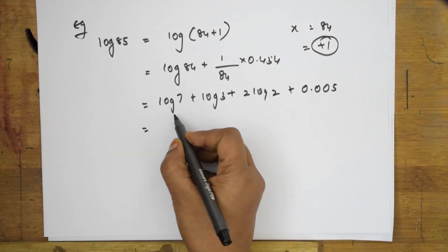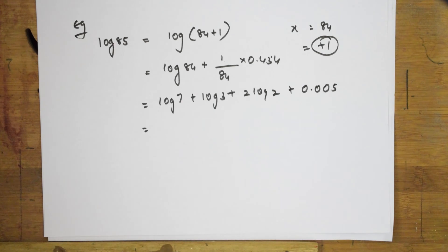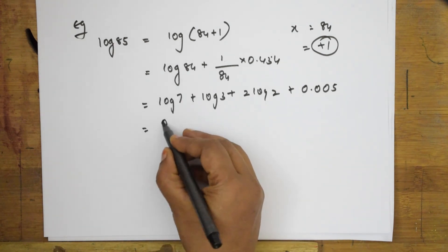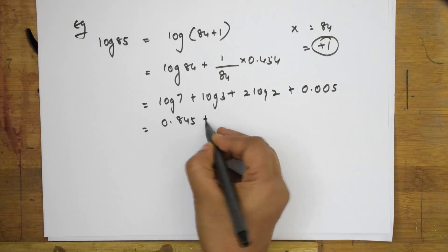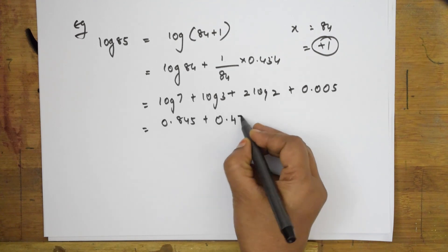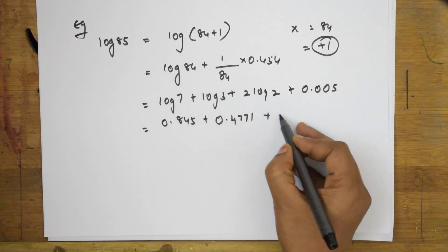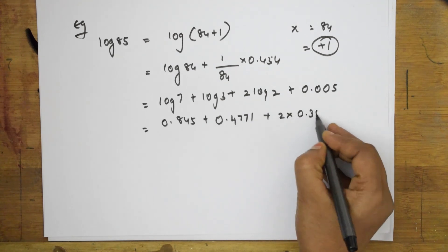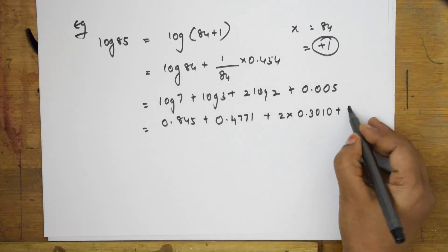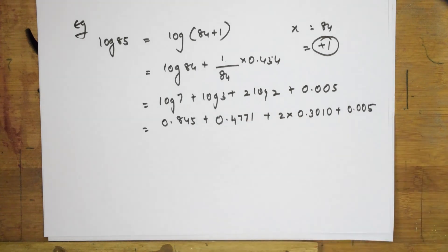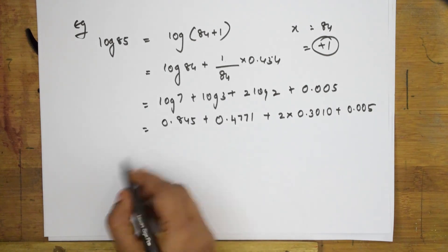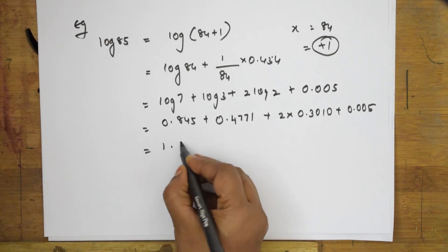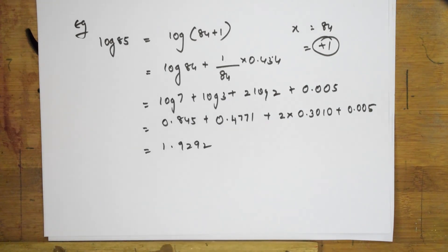Let us write the value of 7. I asked you to remember log value of 2, 3, 5, 7. Log 7 value is 0.845. What is log 3 value? 0.4771. What do we learn log 2 value? It is 0.3010 plus this value which we have taken after multiplying the correction factor, this value we have got. Now, we will add the whole thing. I get an answer of 1.9292.